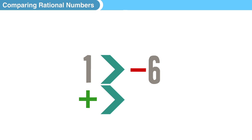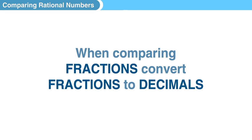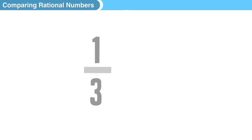Rule number two: when comparing fractions, convert fractions to decimals. So here we have one-third is less than three-eighths. It's kind of tough to compare the two when they're sitting there as fractions.